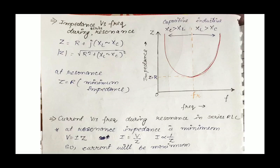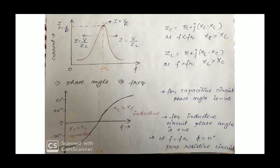Plotting current versus frequency during resonance: in an AC circuit, voltage equals current times impedance, so current is inversely proportional to impedance. Therefore current will be maximum at resonance. From the current versus frequency graph, the current is maximum at the resonant frequency and we get a bell-shaped curve.